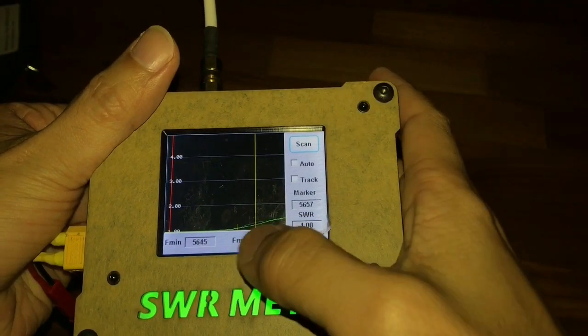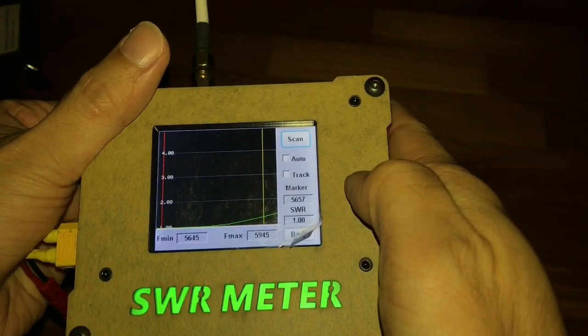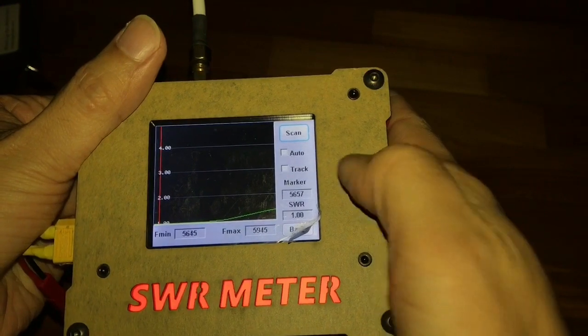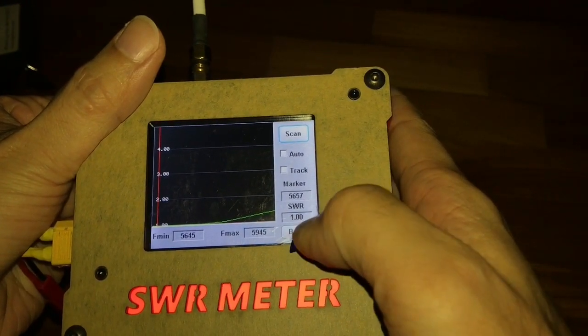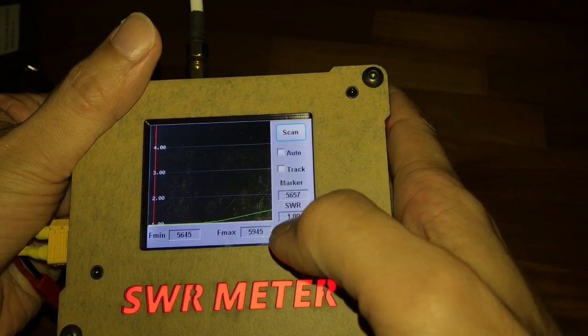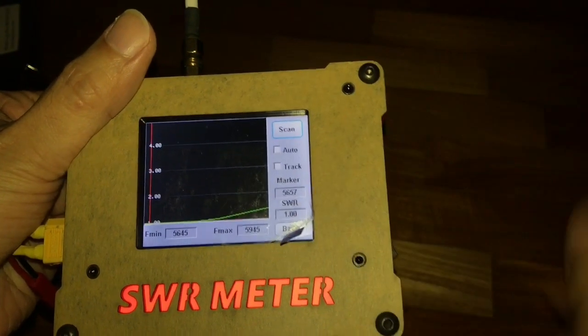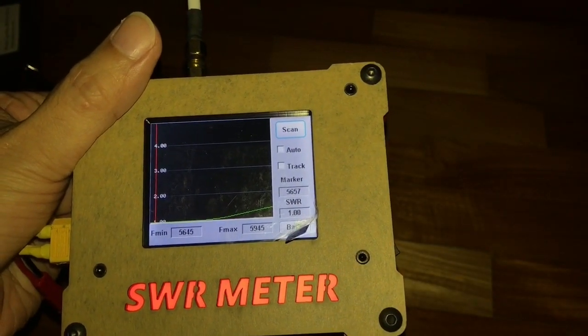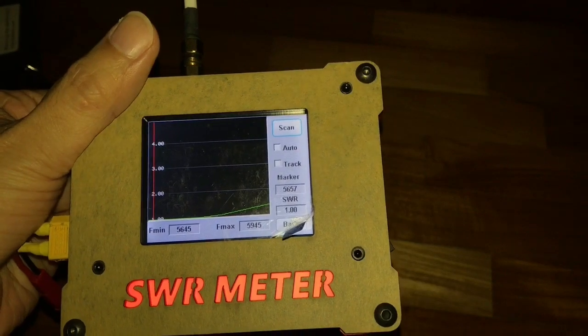Wow, it's really good. So it says here the SWR at its lowest is actually 1, which is perfect. But we know there's no such thing as a perfect antenna. So anyway, let us compare this measurement with the measurement taken from the lab.